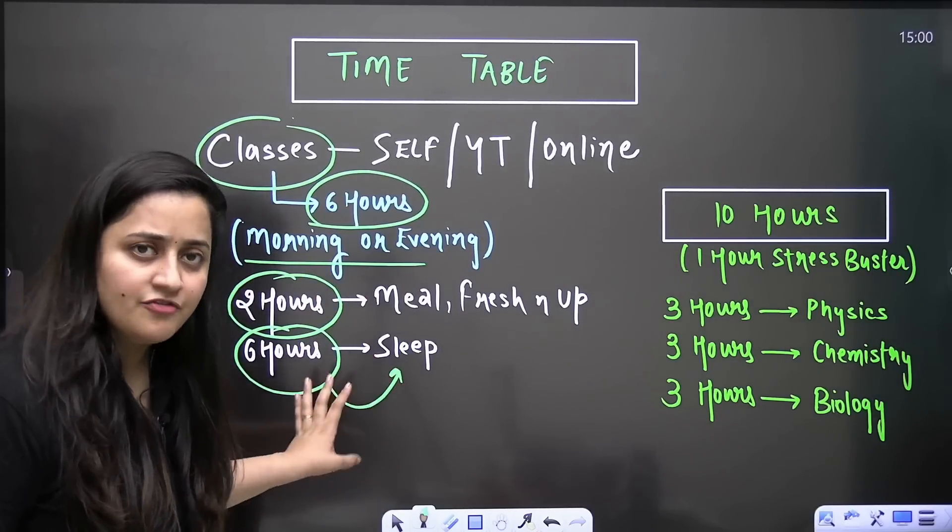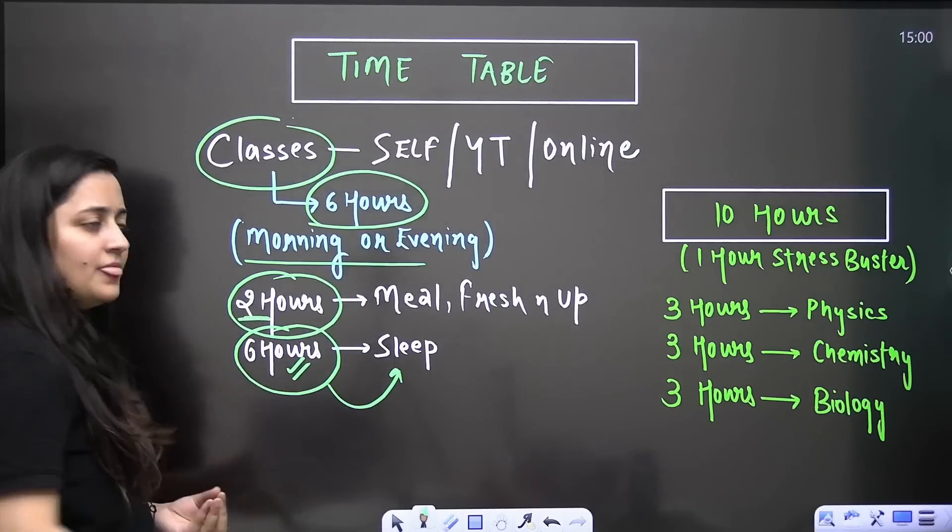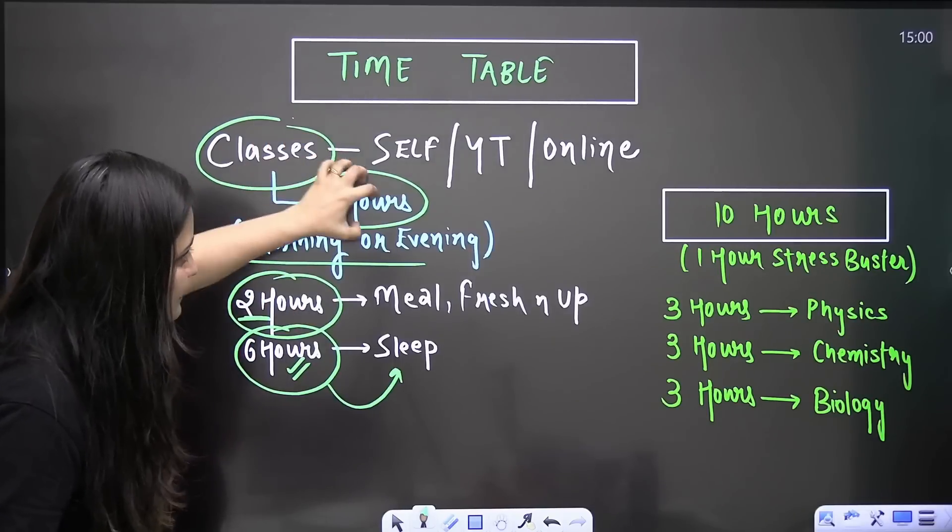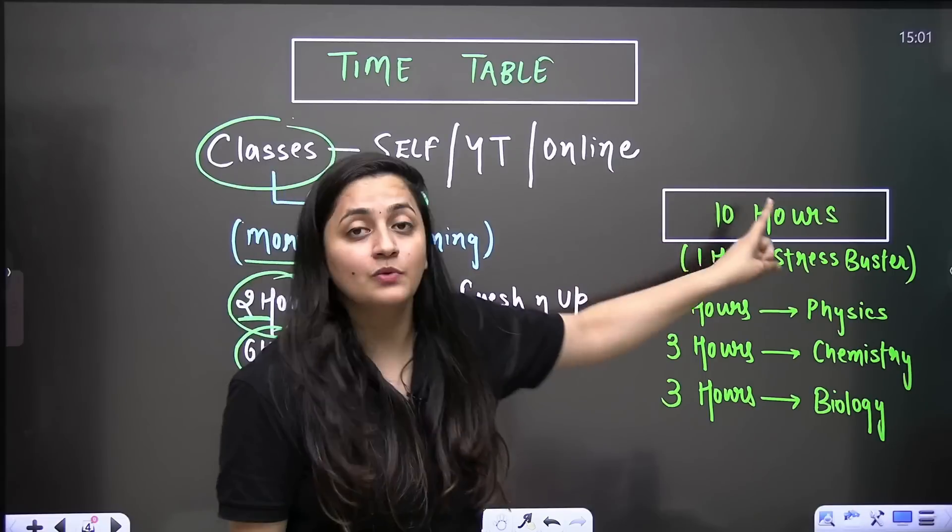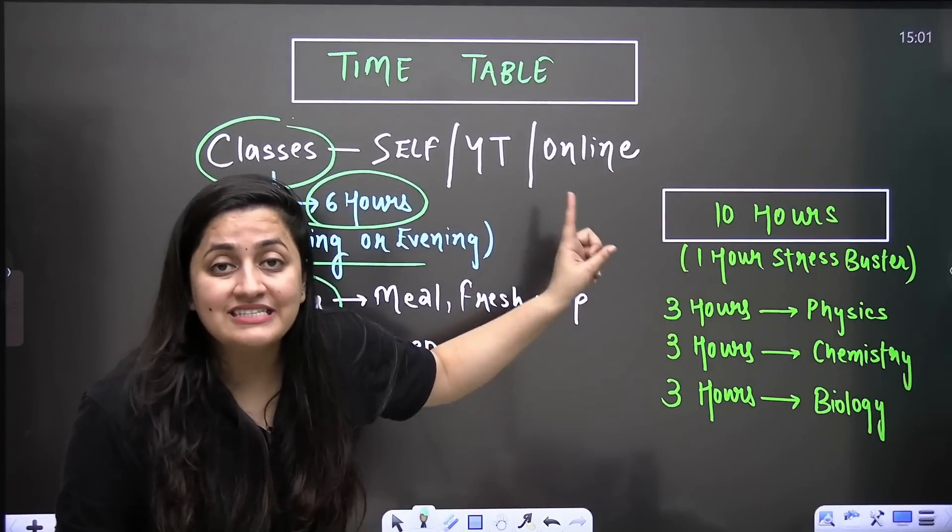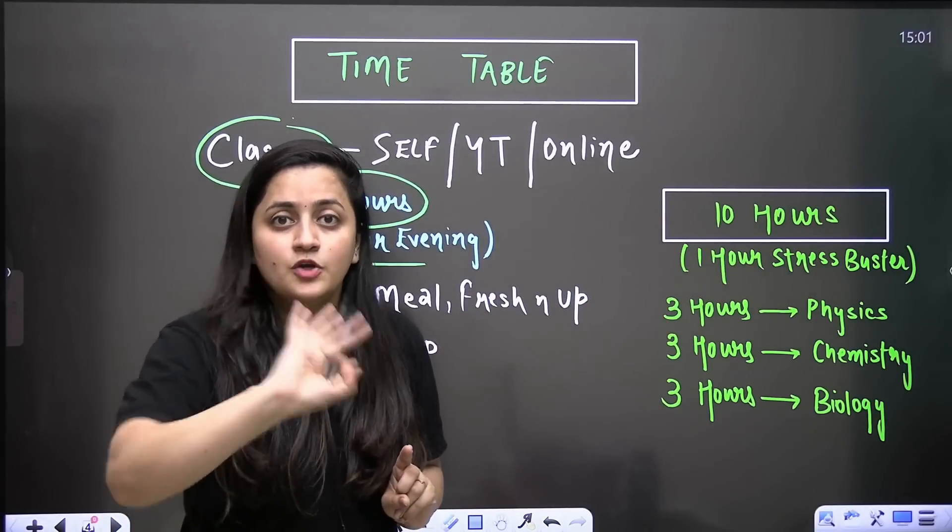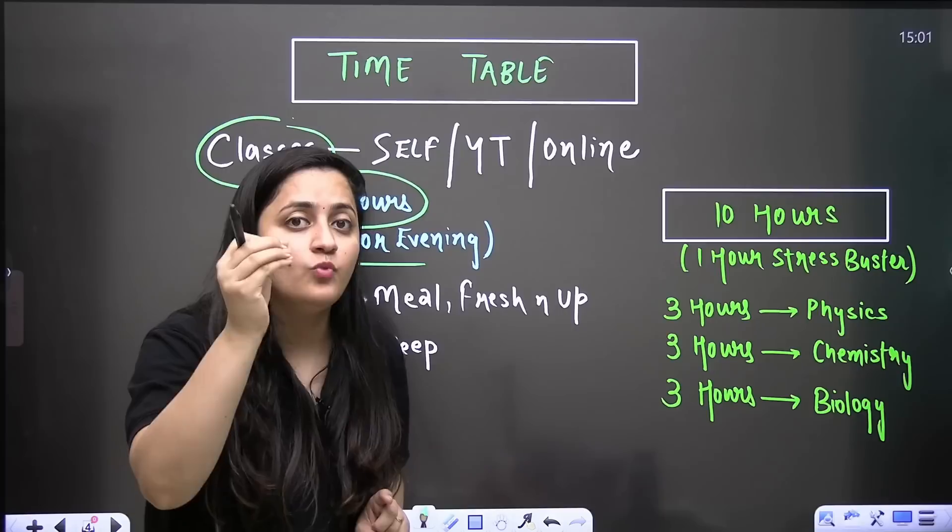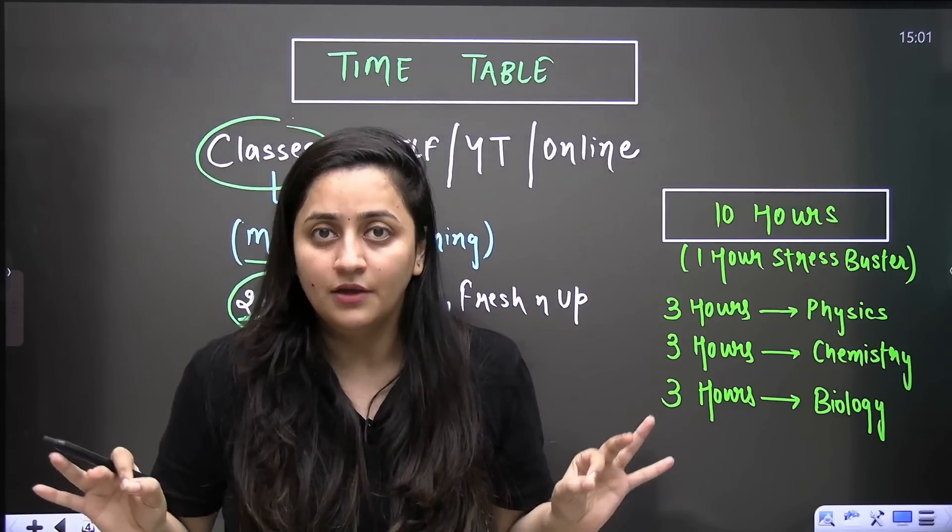That is more than sufficient. And if you want to increase the duration here, you can reduce this. So this is it. Now after spending six hours in your classes, two hours for meal and freshen up, six hours for sleep, you are still left with 10 hours. You still have 10 hours. Even toppers, they don't know that they will be the toppers. It's just that they have utilized their time wisely. They were consistent.